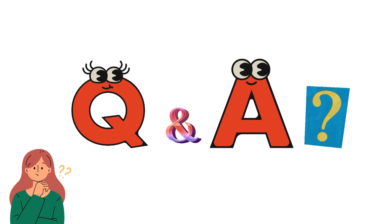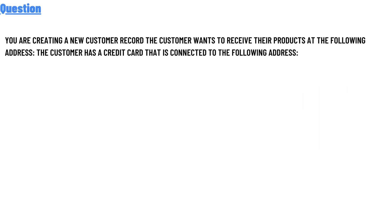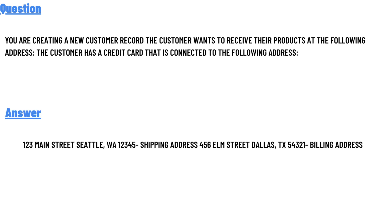Our today's question is: you are creating a new customer record because the customer wants to receive their product at a different address. The customer has a credit card connected to a different address. The correct answer is: shipping address — 123 Main Street, Seattle, WA 12345; billing address — 456 Elm Street, Dallas, TX 54321.